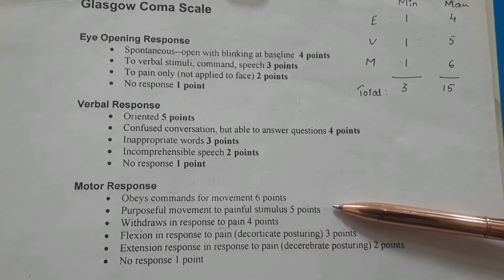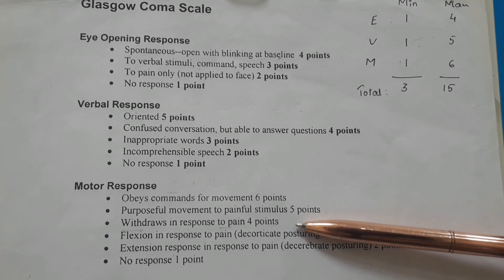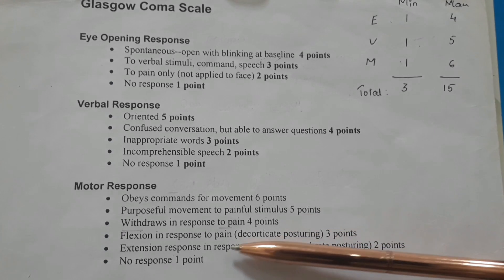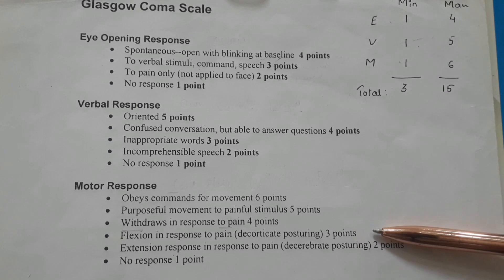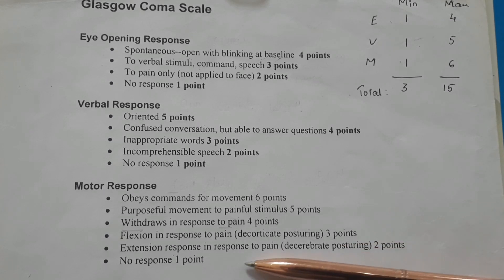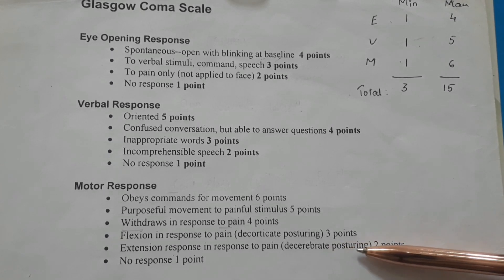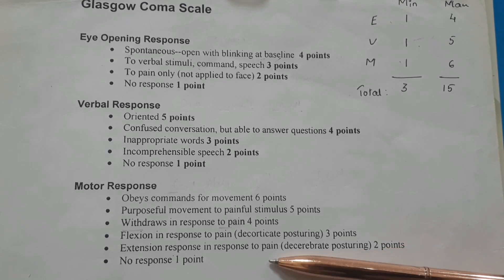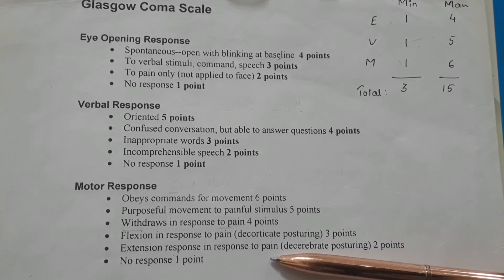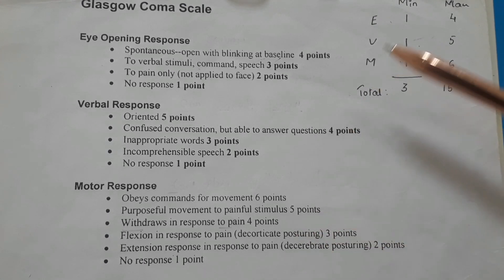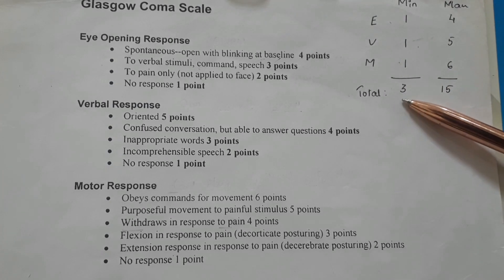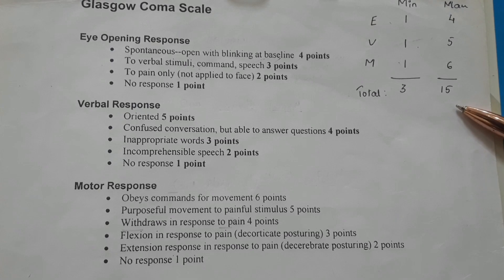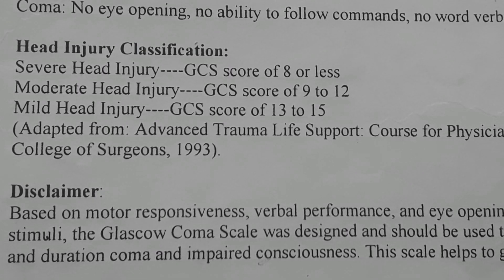Continuing motor response: withdraws in response to pain is 4 points; flexion in response to pain, which is decorticate posturing, is 3 points; extension in response to pain, that is decerebrate posturing, is 2 points; no response is 1 point. In the Glasgow Coma Scale you can get a minimum score of 3 and a maximum score of 15.